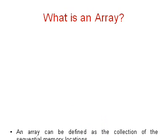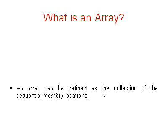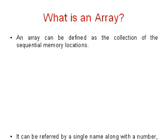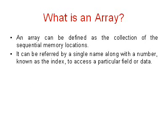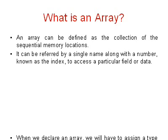So what is an array basically? An array can be defined as a collection of sequential memory locations. It can be referred to by a single name along with a number known as the index to access a particular field or data.